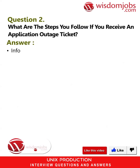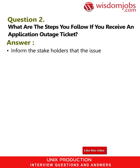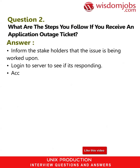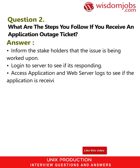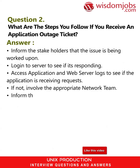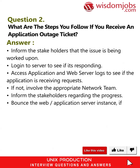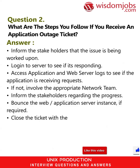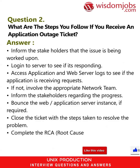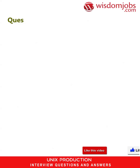Question 2: What are the steps you follow if you receive an application outage ticket? Answer: Inform the stakeholders that the issue is being worked upon. Login to the server to see if it's responding. Access application and web server logs to see if the application is receiving requests. If not, involve the appropriate network team. Inform the stakeholders regarding the progress. Bounce the web application server instance if required. Close the ticket with the steps taken to resolve the problem.